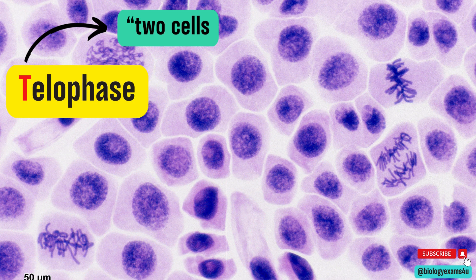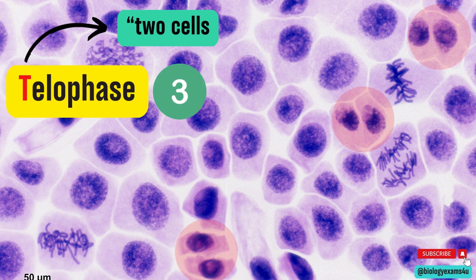So this one — here we can see chromosomes clumped together at two poles. The size of the cell is small compared to the size of the cell at interphase. This is the first one. Then this is the second one and this is the third one. So there are three cells in telophase.